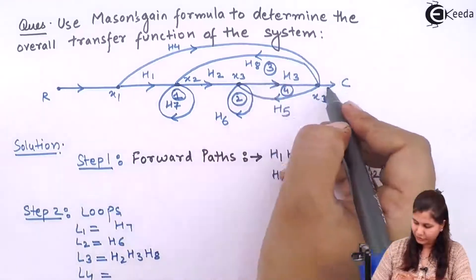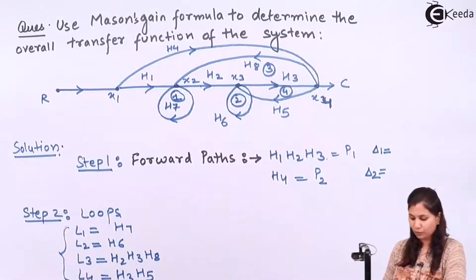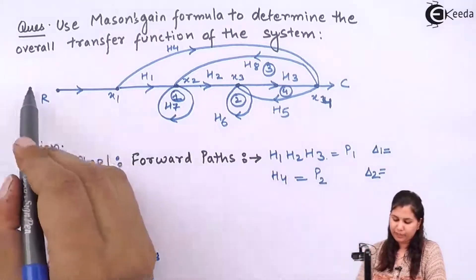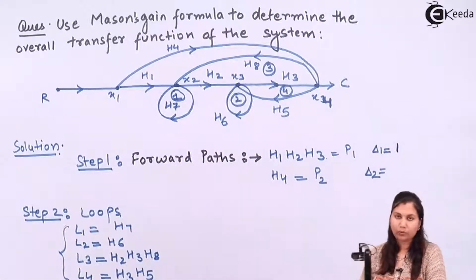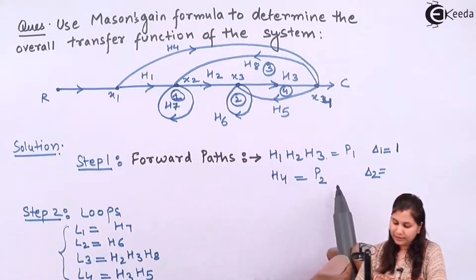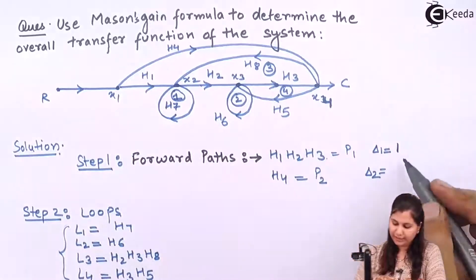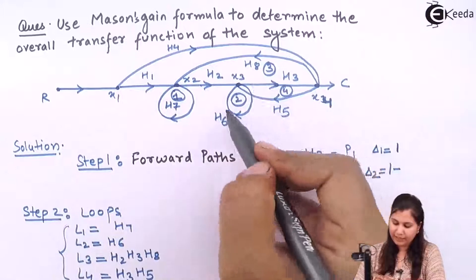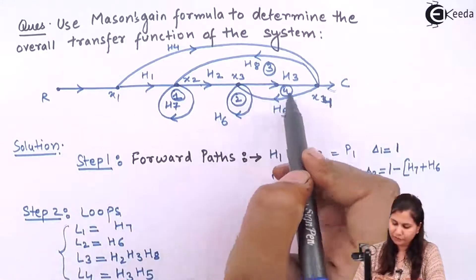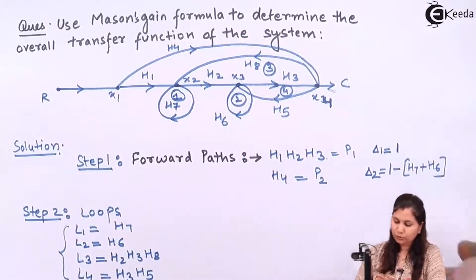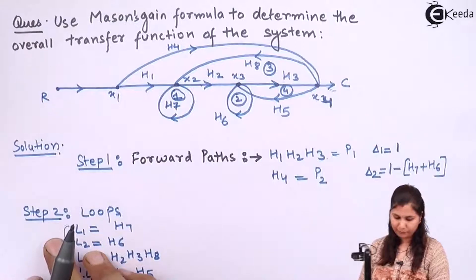L4 is H3·H5. Now, for Delta 1: since all four loops touch forward path P1 (H1·H2·H3), we have Delta 1 = 1. For Delta 2 corresponding to forward path P2 = H4: loops L1 (H7) and L2 (H6) are not touching it, but loops L3 and L4 are touching the X4 node. So Delta 2 = 1 − H7 − H6.